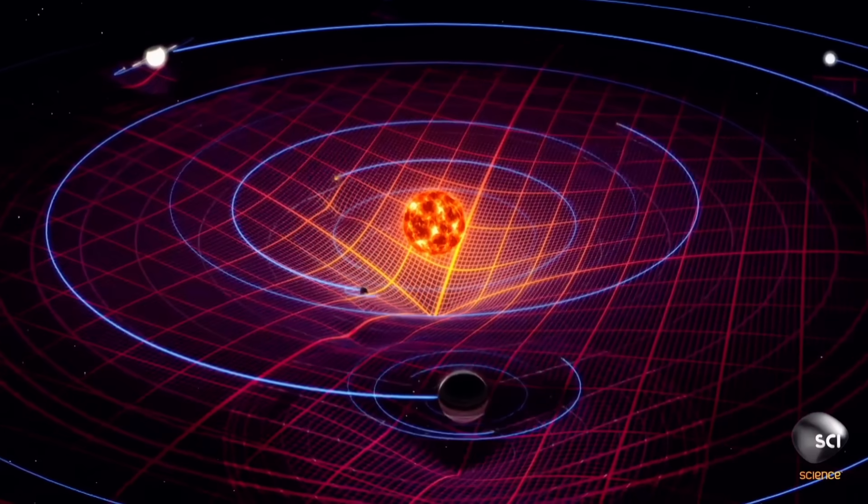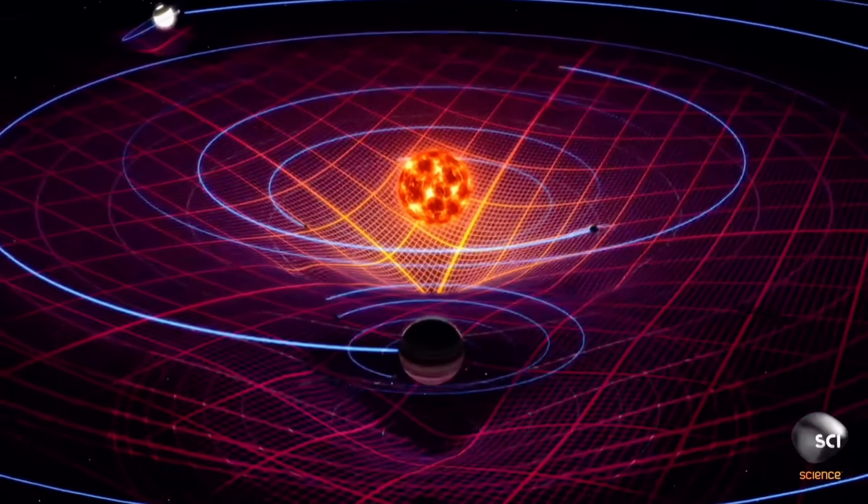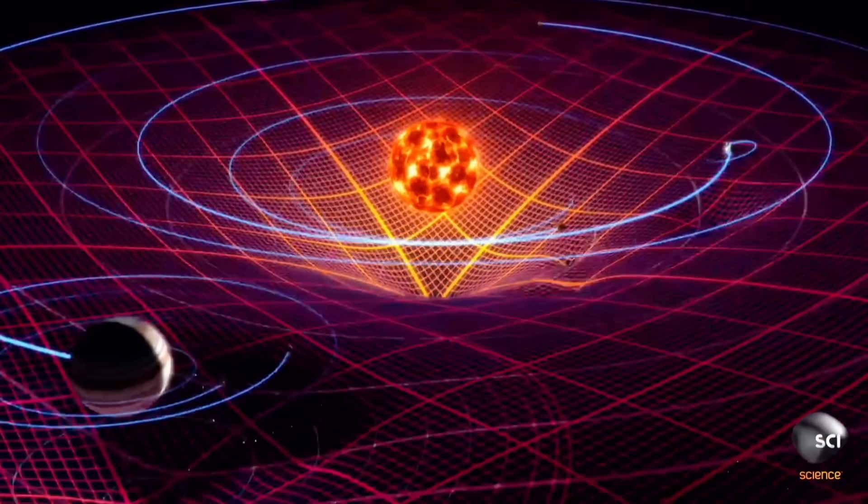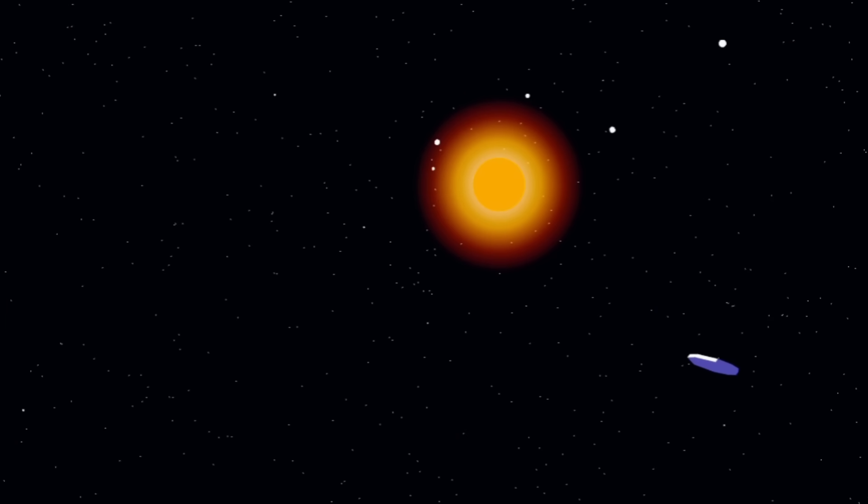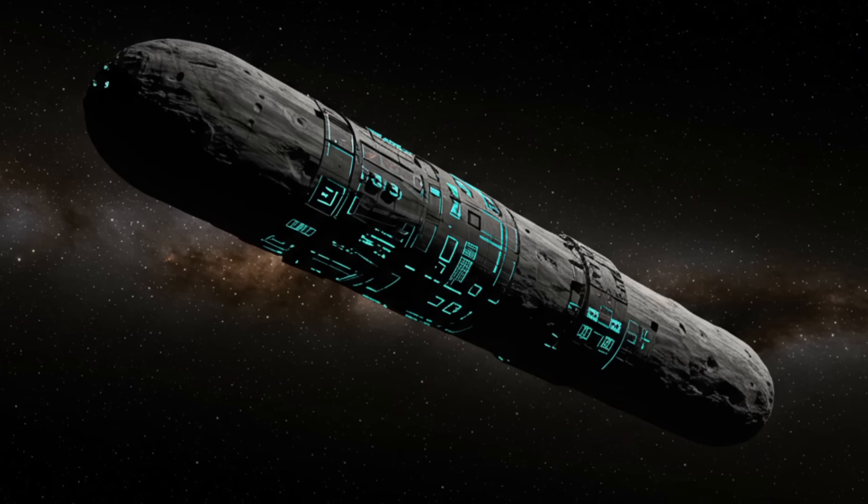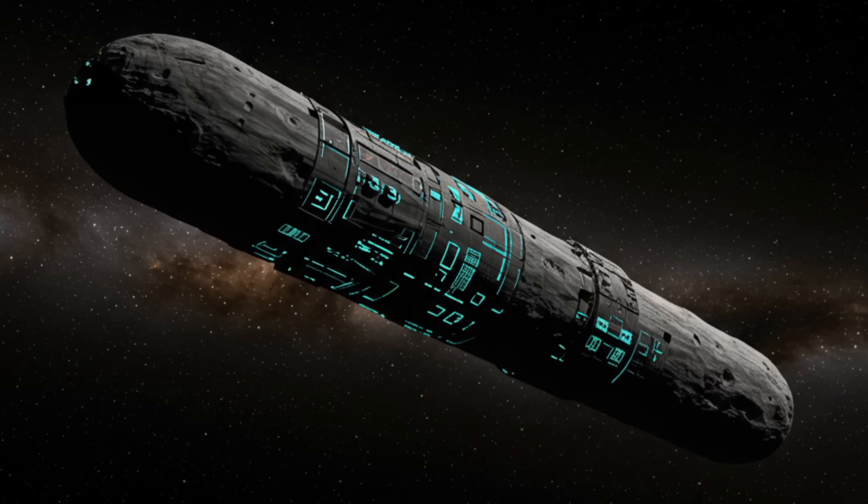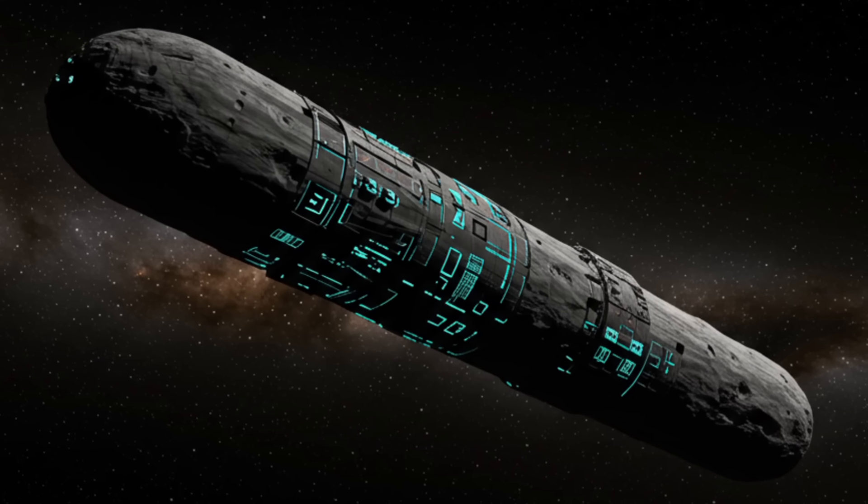He wants to look for signs of non-gravitational acceleration, which means movement that can't be explained just by gravity alone. If such a force is detected, it could hint at some kind of artificial propulsion. In other words, it might not be a natural object at all.